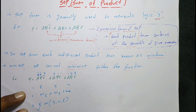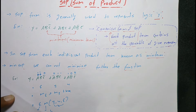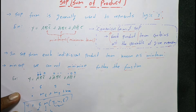We write this equation as the sum of min terms: that is m3, m4, m6. In this way we can also write SOP form functions using min terms.